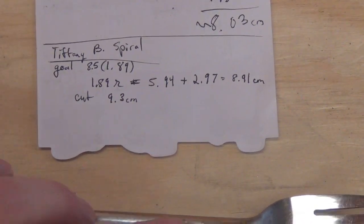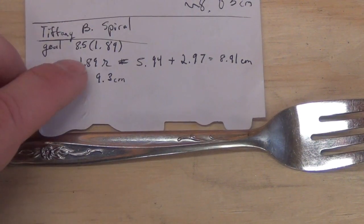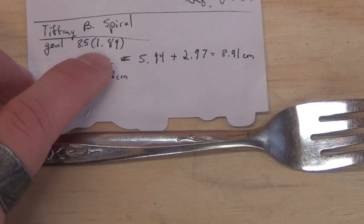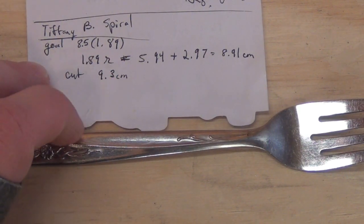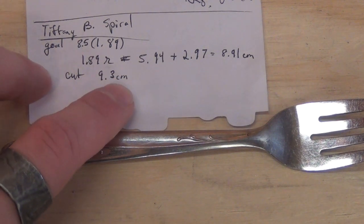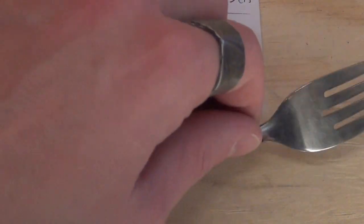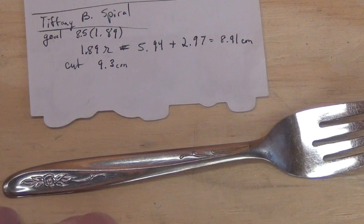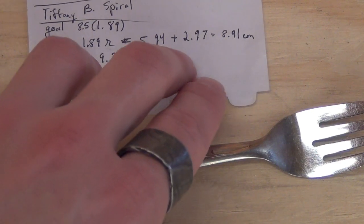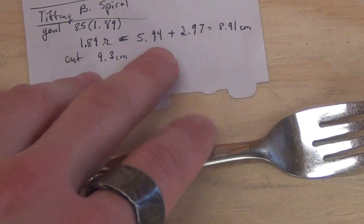My goal is to make this one a size 8.5, which translates to a 1.89 centimeter diameter. You're going to multiply that by pi to get your inner circumference. But since this is a spiral, I'm going to add a half twist to that, so it's just this divided by two and it gives you that.